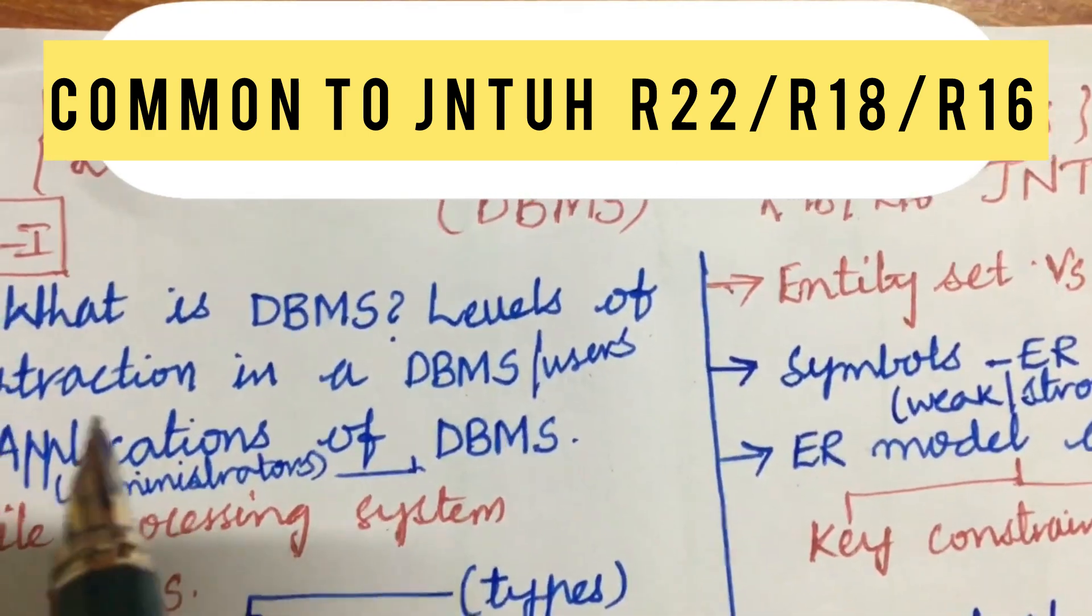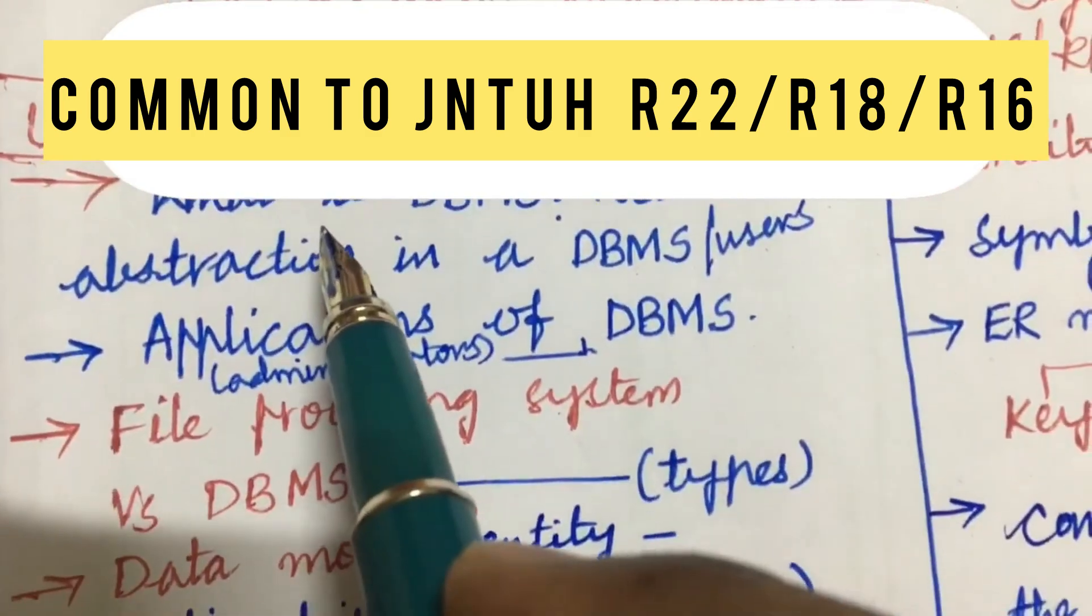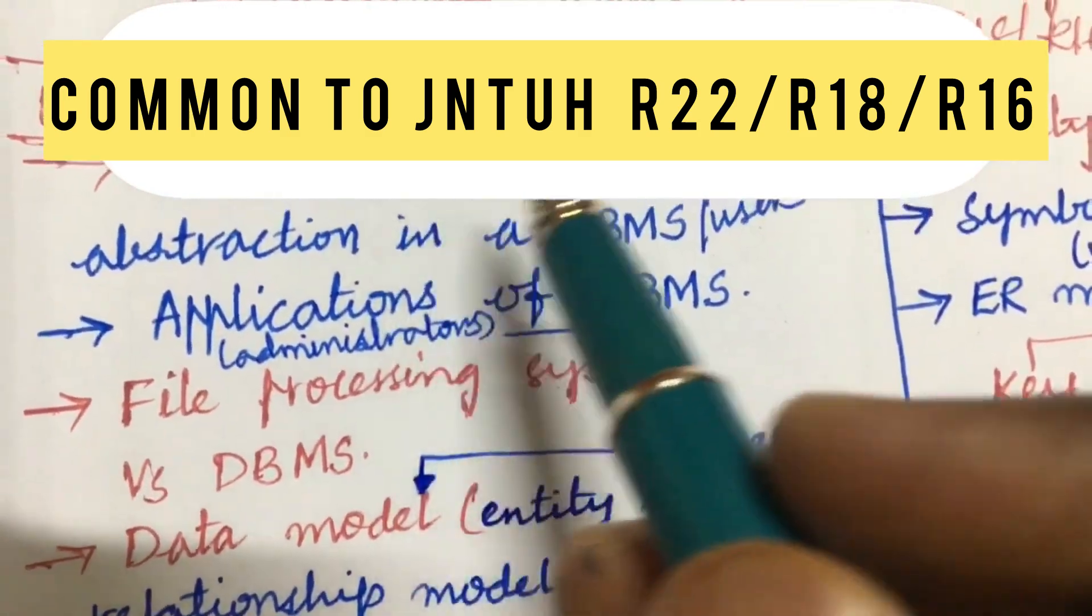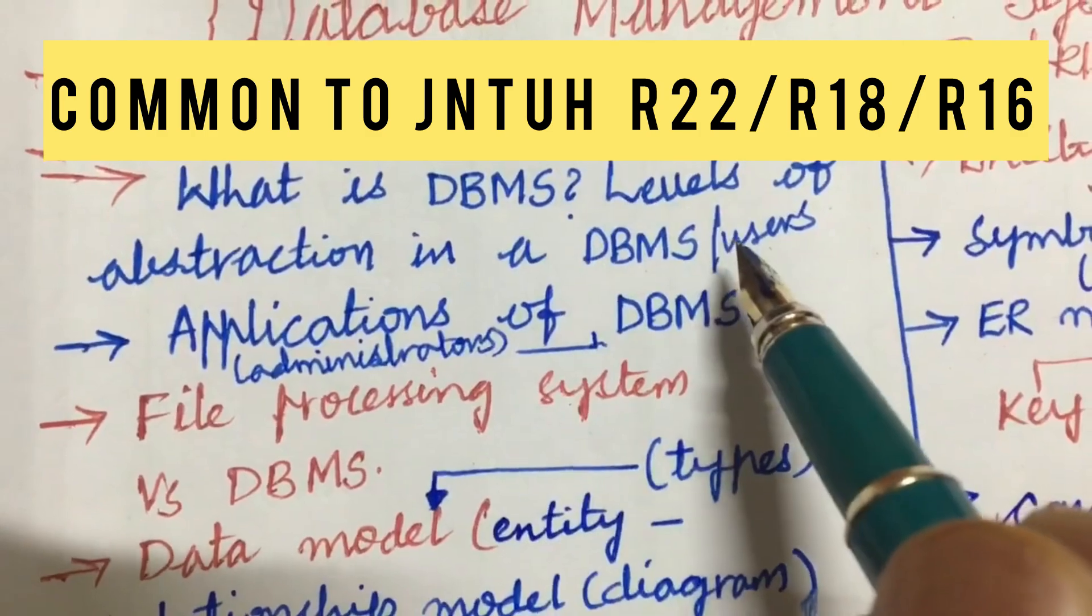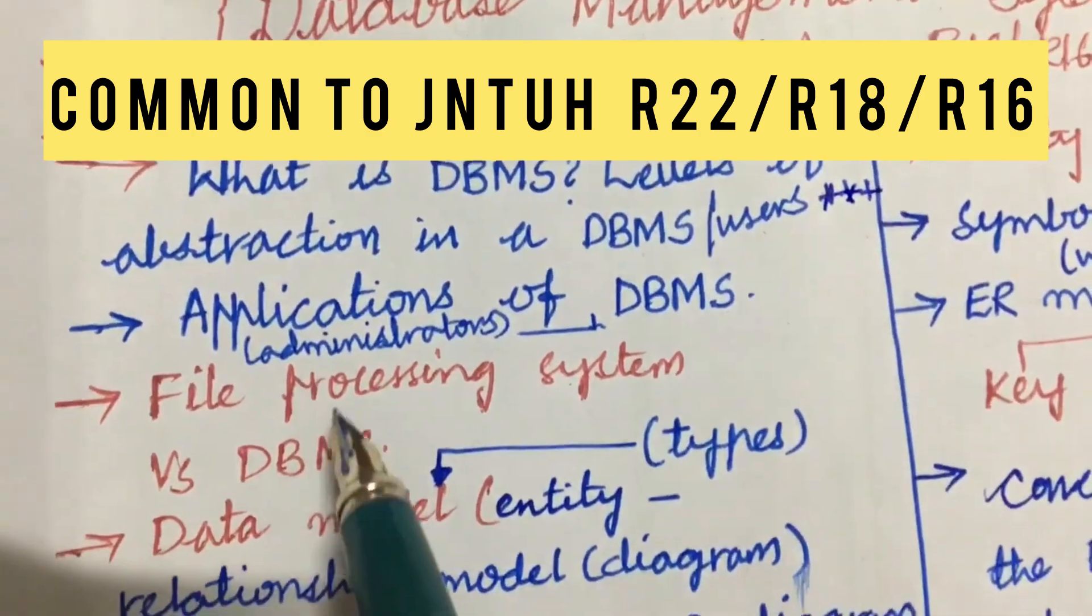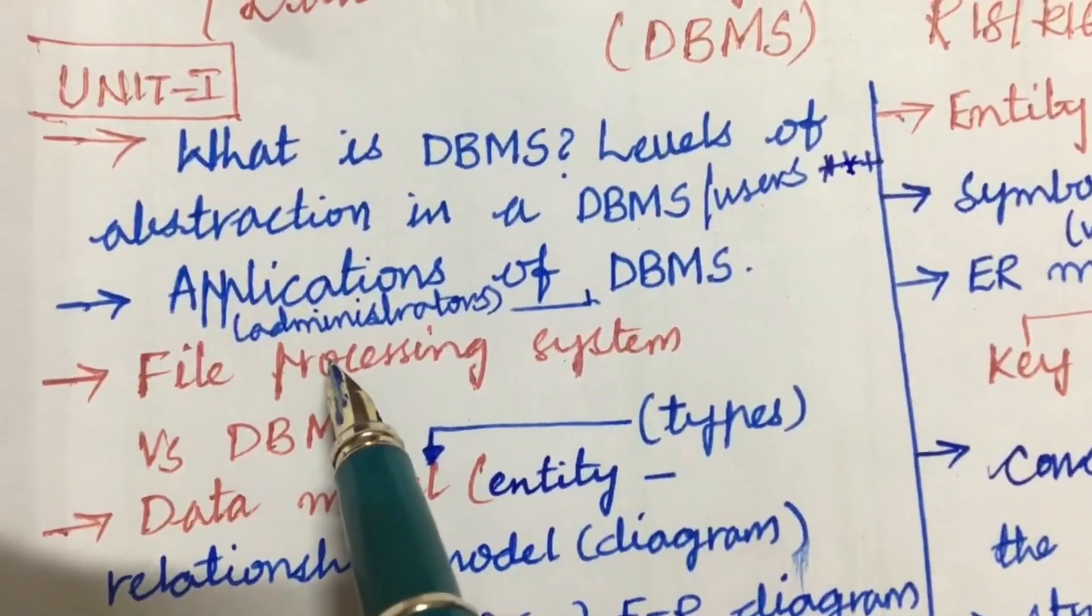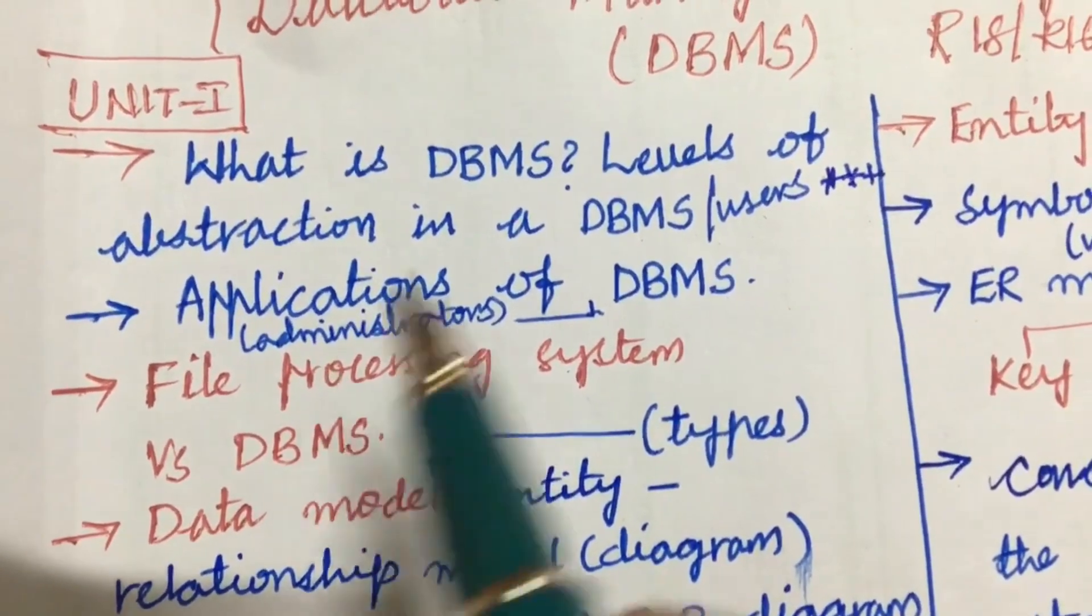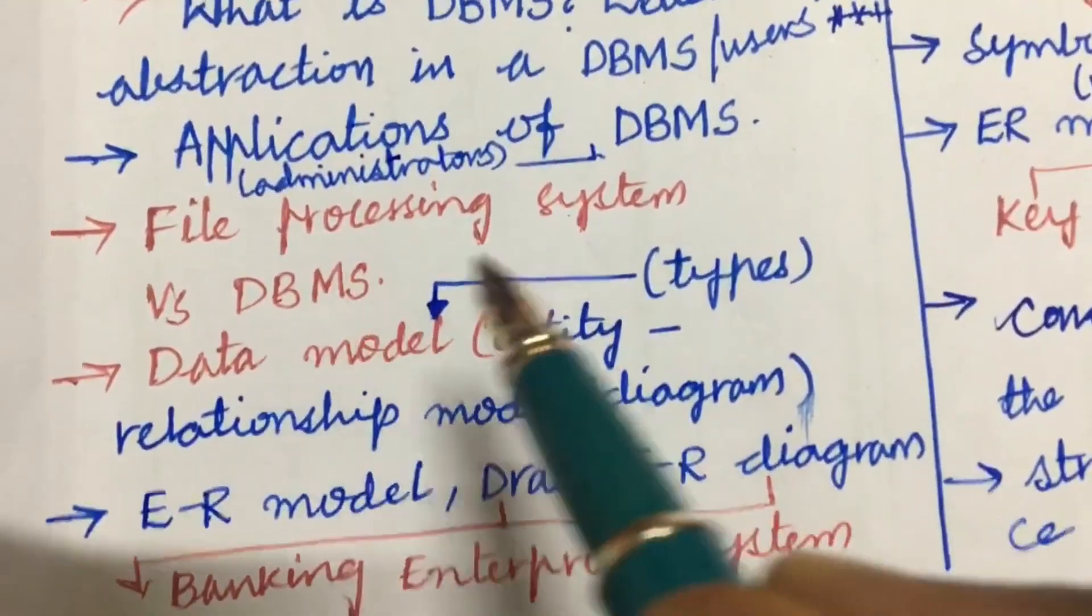The first and foremost gunshot question I can give you is define DBMS as well as the levels of abstraction in a DBMS, as well as the users. If it is A, the B will be the applications of DBMS and the administrators. File processing system versus DBMS, the differences.